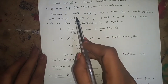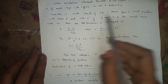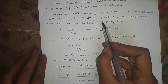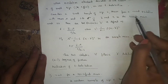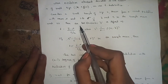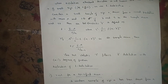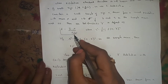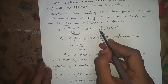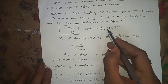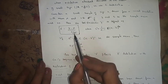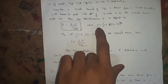Consider a small sample of size n drawn from a normal population with mean mu and standard deviation sigma. If x-bar and s are the sample mean and standard deviation, then the test statistic t is defined as: t = (x-bar − μ) / (s / √n), where s² = (1/(n−1)) × Σ(xᵢ − x-bar)².